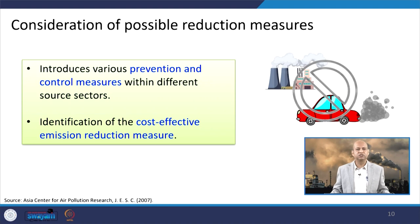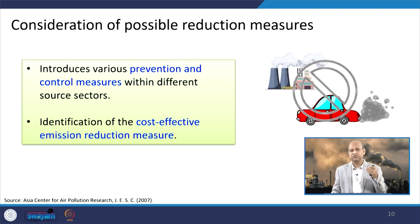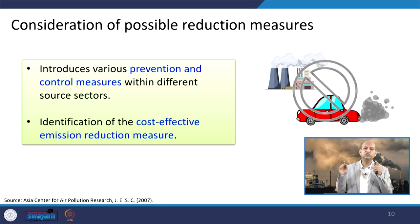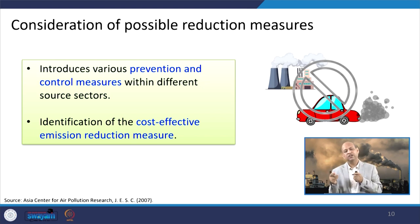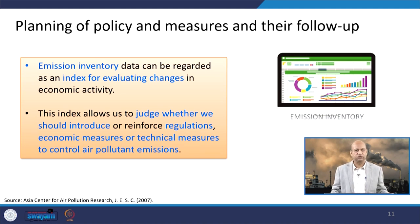When considering possible reduction measures, it is important to know whether prevention and control measures are working. Emission inventories incorporate those control measures — for example, if a power plant has an ESP to control emissions, its efficiency changes the emissions, and accordingly the emission inventory changes. Cost-effective emission reduction measures can be assessed by comparing different technologies in the emission inventory to choose the best technology giving the least emissions. These inventories help rely upon the decision-making process to judge whether a policy is effective.